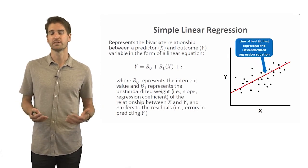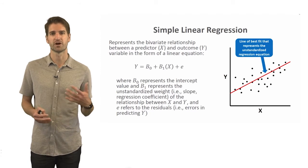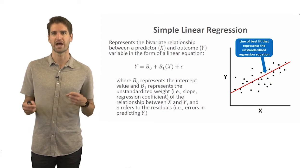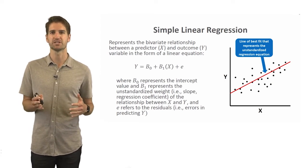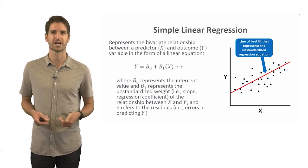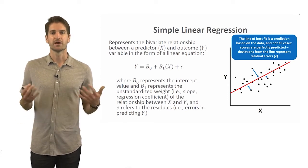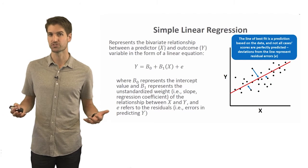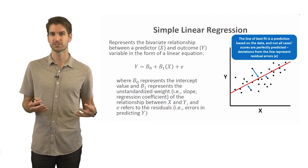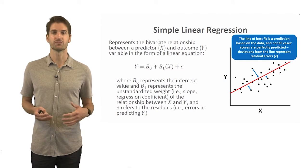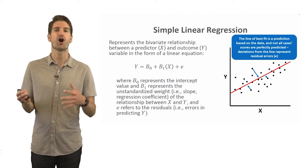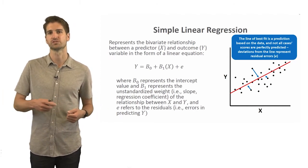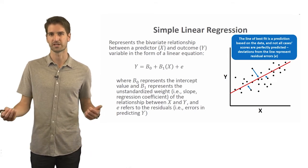There appears to be somewhat of an upward trend in terms of how these different circles are scattered. Part of what regression — and specifically simple linear regression — is about is finding that line of best fit that best represents the data while minimizing the errors around that line. Ideally, we want that line to be as close as possible to all those different dots. If this were a perfect linear relationship, all of those dots would be perfectly lined up in a straight line, and the red line would completely superimpose over them.